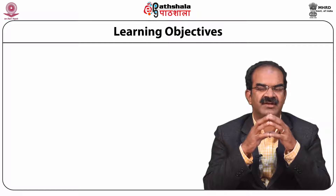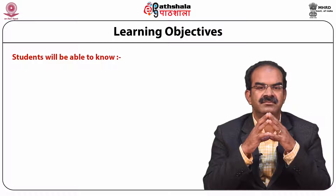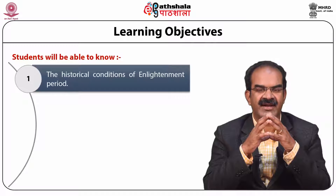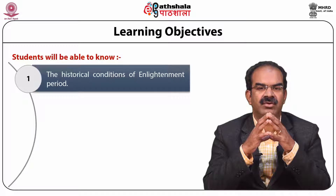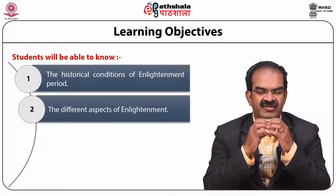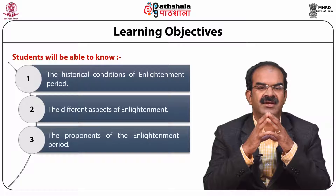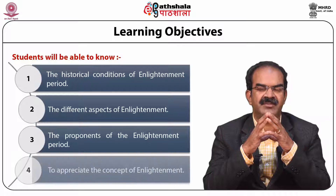Before we start this module, let us see what are the learning outcomes. Students will be able to know what are the historical conditions of the Enlightenment period. Students will know what are the different aspects of Enlightenment, and who are the critical components proposed in this Enlightenment period. And lastly, students will be able to appreciate the beauty of the Enlightenment period.